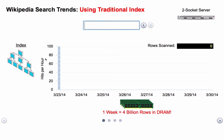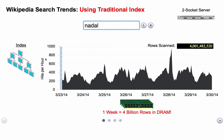I'll show you how this works. You type a search term into the search box, and we will then graph the Wikipedia search data. What we're graphing is how many searches there were per hour — how many hits per hour on this search term. I type Nadal, who was the winner of the recent French Open Tennis Tournament, and this shows the number of searches per hour for Nadal between March 23rd and 30th varied from about 200 to 400 per hour with a few spikes. There tends to be more searches during the day than at night.